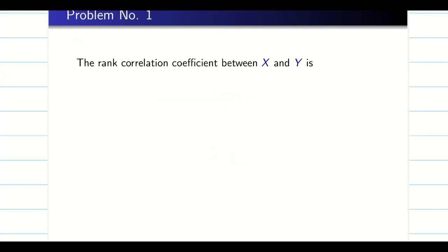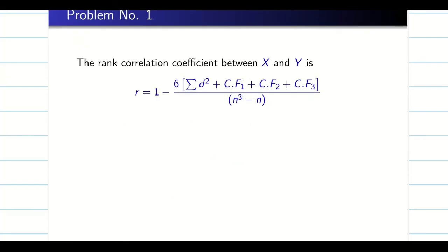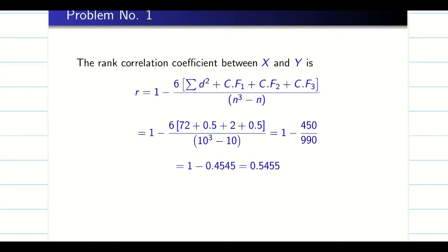Add all the correction factors to the summation of d², multiply the whole expression by 6, and then evaluate with your calculator. That completes the repeated ranks formula. Hope you are now confident in solving repeated rank correlation problems.